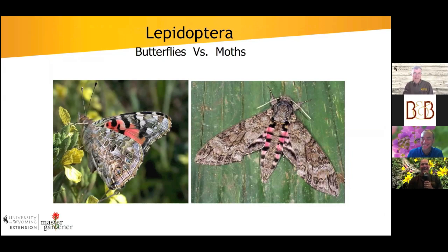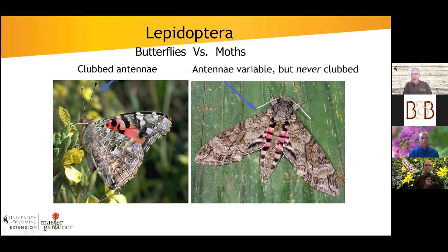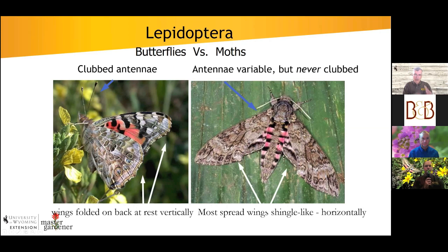Butterflies and moths — traditionally you see them on flowers and think pollinator, and many of them are effective. They're both in the order Lepidoptera, which means 'scale wing' — the color and pattern on their wings comes from a mosaic of tiny colored scales. We separate them into butterflies and moths. There are actually far more moths than butterflies. Butterflies all have clubbed antennae and hold their wings vertically at rest; moths have variable antennae — never clubbed, can be thread-like or feathery — and fold their wings horizontally shingle-like at rest.